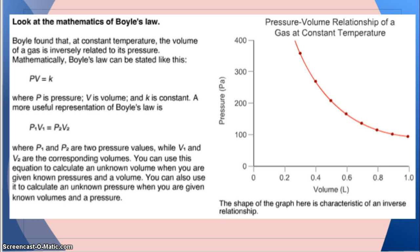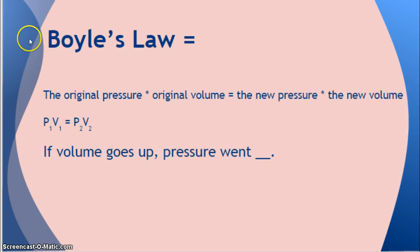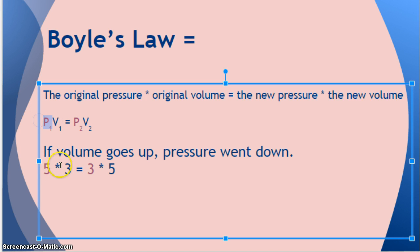If you've been zoning out, time to wake up — this is what you need to know. Boyle's Law: P1V1 equals P2V2. If volume goes up, pressure went down. Here's a mathematical example: pressure started at 5 and volume started at 3. If pressure goes to 3, volume has to go up to 5, because 5 times 3 equals 3 times 5. The numbers are never this pretty in real problems, but this shows the mathematical relationship.